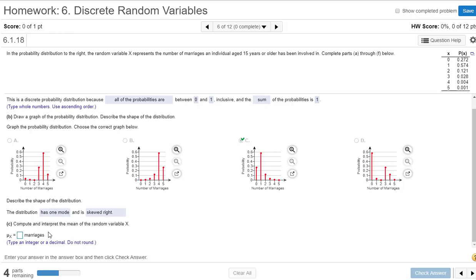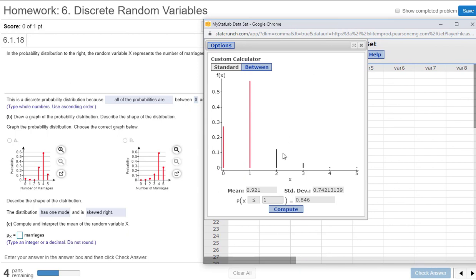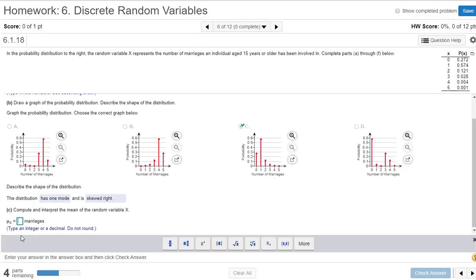Okay, Compute and Interpret the Mean of the Random Variable X. So we have a couple options here. You can just say 0 times 0.272 plus 1 times 0.575, 574, and so on. Or did you notice something on that graph that we did? It gives me the mean, which is really nice. So it says type an integer or a decimal. Do not round. So 0.921.